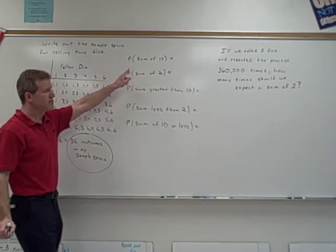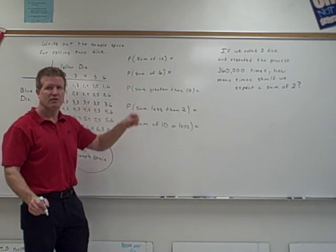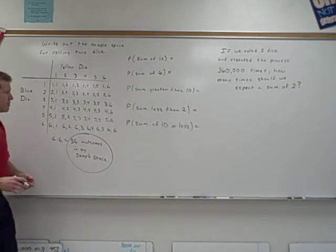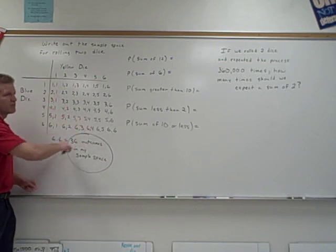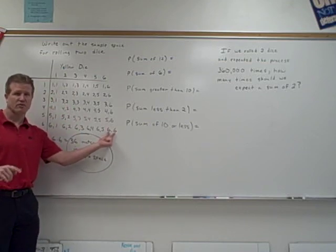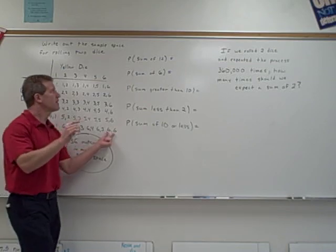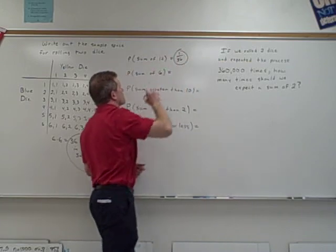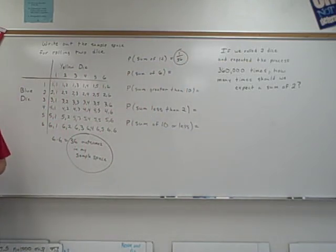All right, if I want to figure out the probability of getting a sum of 12, I need to think about how many ways can I get a sum of 12 out of the total. So how many ways do you see to get a sum of 12 up here? One. One way, right? Six and a six is the only way. So there's only one way to be successful in getting a sum of 12 out of 36 possible rolls. So the probability of a sum of 12 would be one out of 36.